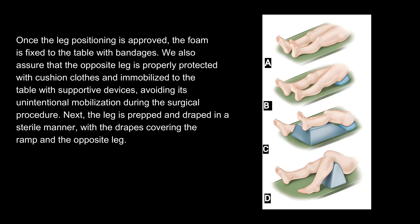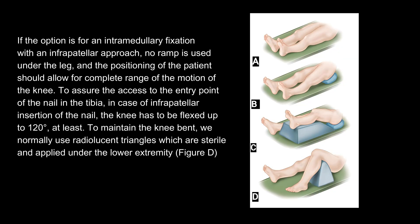Once the leg positioning is approved, the foam is fixed to the table with bandages. We also assure that the opposite leg is properly protected with cushion clothes and immobilized to the table with supportive devices, avoiding its unintentional mobilization during the surgical procedure. Next, the leg is prepped and draped in a sterile manner, with the drapes covering the ramp and the opposite leg. If the option is for intramedullary fixation with an infrapatellar approach, no ramp is used under the leg, and the positioning of the patient should allow for complete range of motion of the knee.